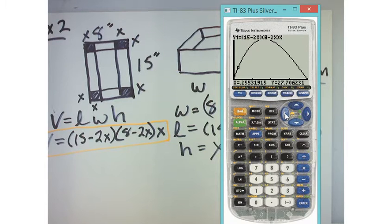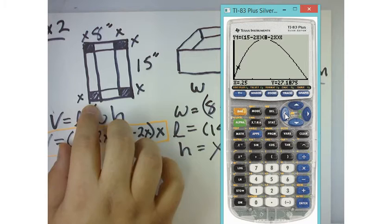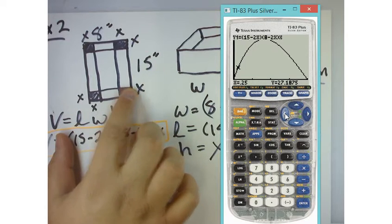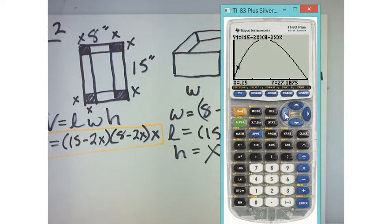So, as for example, and I want you guys to look at the x, y values. If I choose x equals 0.25, a quarter of an inch, that means I'm going to cut a quarter of an inch out here, and a quarter of an inch out here, and a quarter of an inch out here, and a quarter of an inch out here. That gives me a volume of 27.1875 cubic inches.